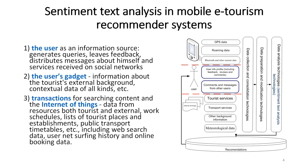The gadget of the tourist leaves information about the external background of a tourist: contextual data, appearance or disappearance from the operational space of various obstacles, and the Internet of Things. This includes data from referential resources, both tourist and external work schedules, lists of tourist places and establishments, including web search data, user net surfing history and online booking data, and more.